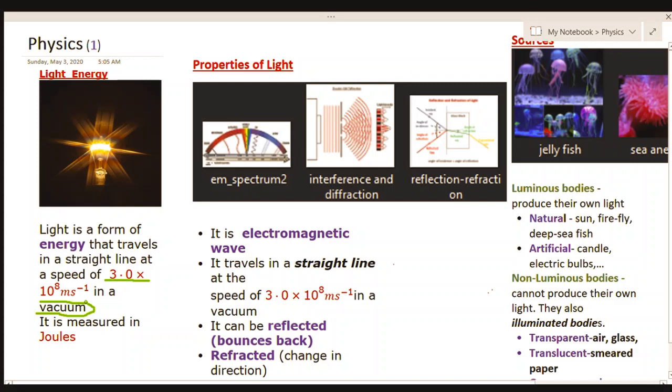As a form of energy, light is measured in joules. All energies, whether kinetic, potential, light energy, or sound energy, are all measured in joules. Now, the properties of light.